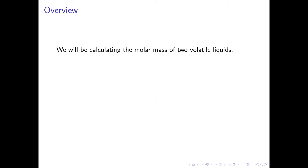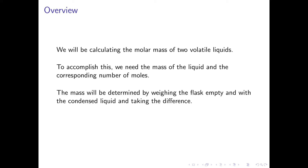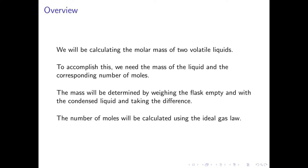We will be calculating the molar mass of two volatile liquids. To accomplish this, we need the mass of the liquid and the corresponding number of moles. The mass will be determined by weighing an empty flask and then the same flask with condensed liquid in it and taking the difference. The number of moles will be determined by first vaporizing the liquid and then calculating the number of moles using the ideal gas law.